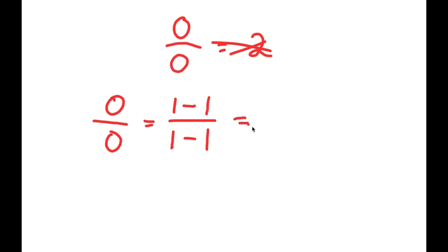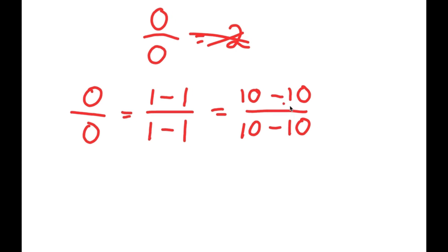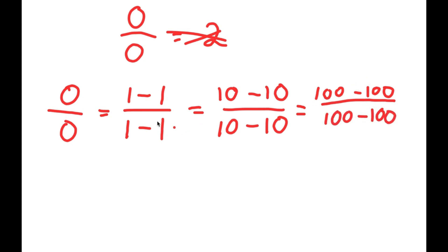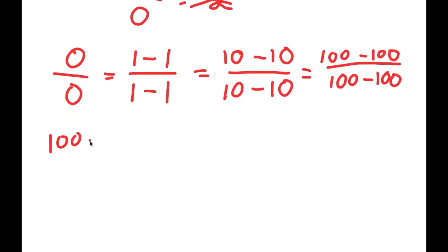This means it's also the same thing as 10 minus 10 over 10 minus 10, and equally 100 minus 100 over 100 minus 100. So let me rewrite this as 100 minus 100 over 100 minus 100 and start making things a little more complicated.